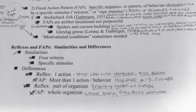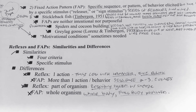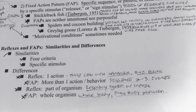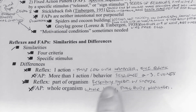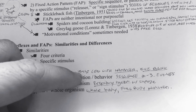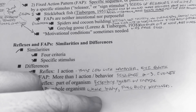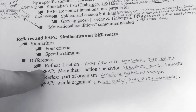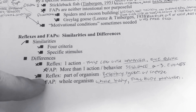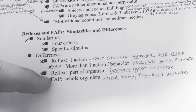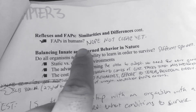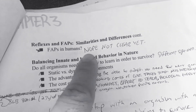A reflex involves only one section of the body — just your chest or nose for a sneeze. A fixed action pattern involves the whole body. This is why animals have fixed action patterns as well as reflexes. Although we haven't proven in science that humans have any fixed action patterns, we definitely have reflexes.